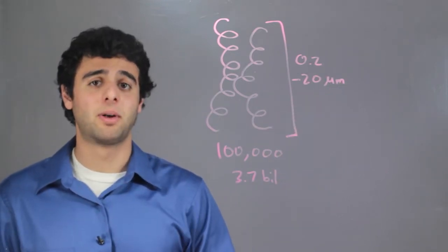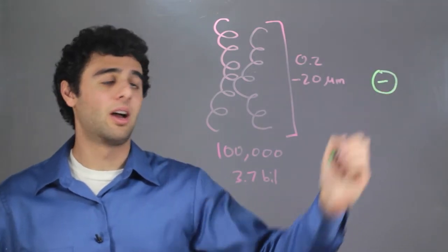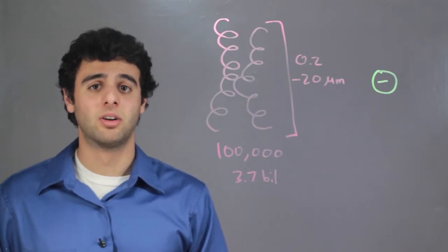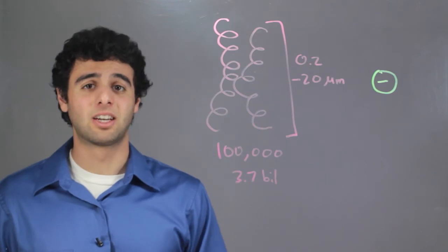How does that compare to an electron? Here we have an electron. An electron is an elementary particle, or a subatomic particle, meaning that it cannot break down anymore. This makes it extremely small.